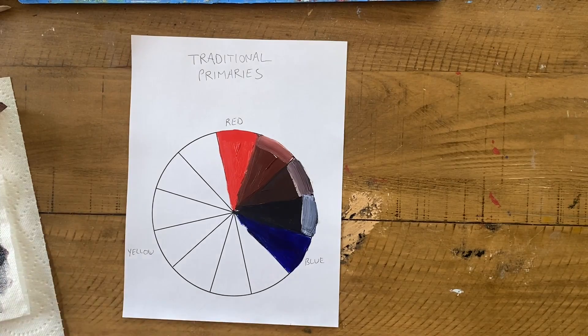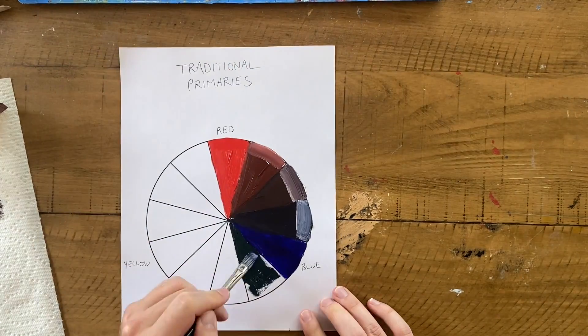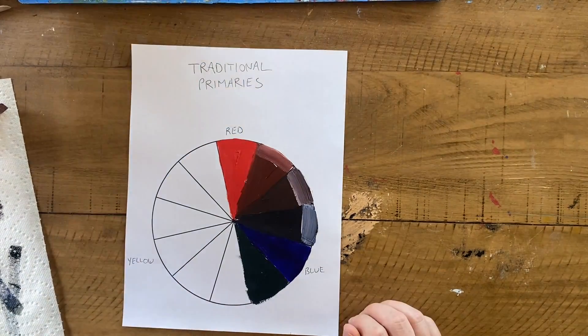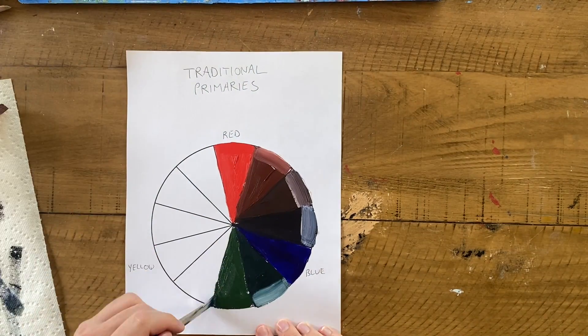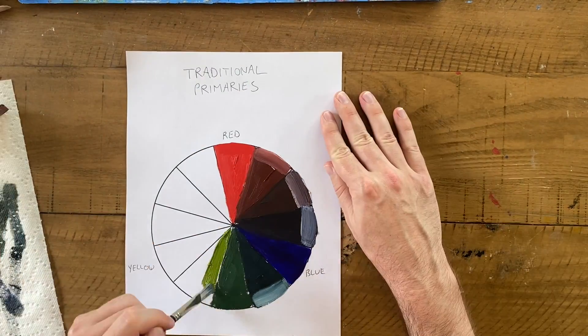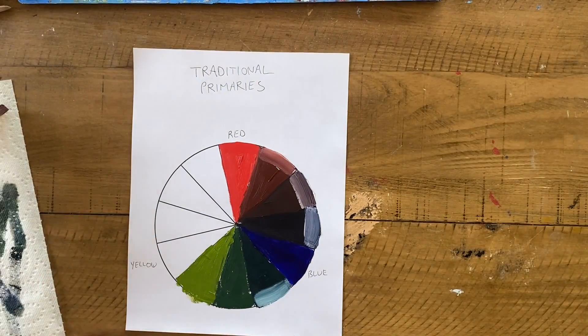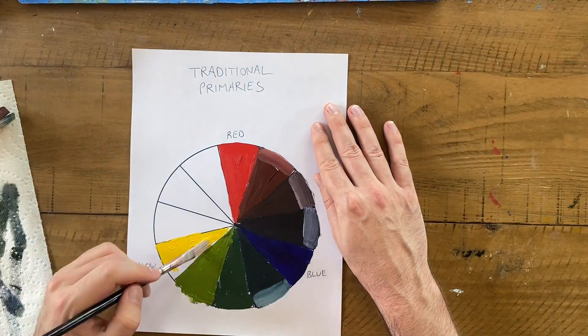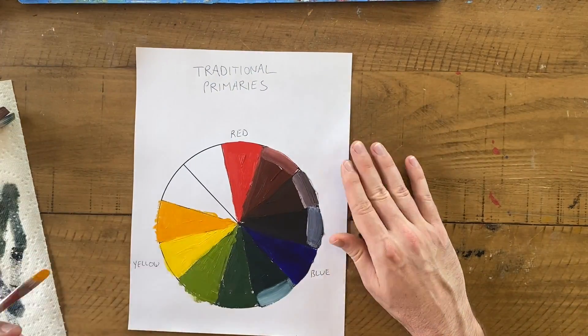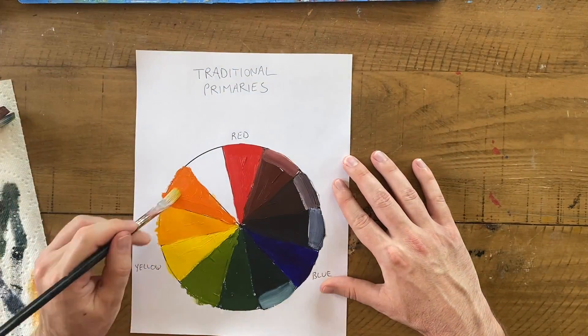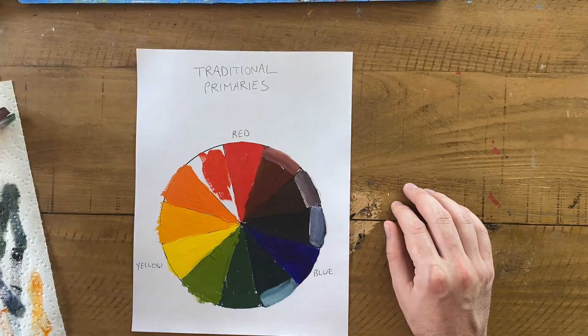So we're already seeing that the first thing I learned about primary colors as a kid is not true. I can't technically mix every single color out of these primary colors. Our three primaries give us a range on the color wheel, not the whole thing. It's true to say I can mix every hue, I can get some kind of a purple, but I can't mix every color.